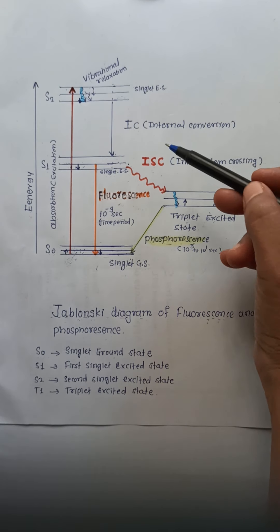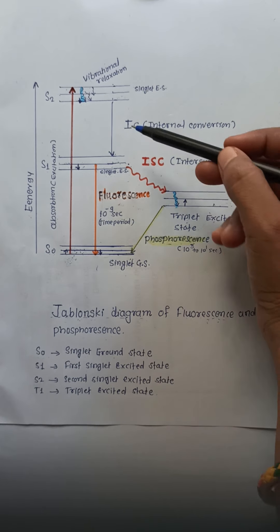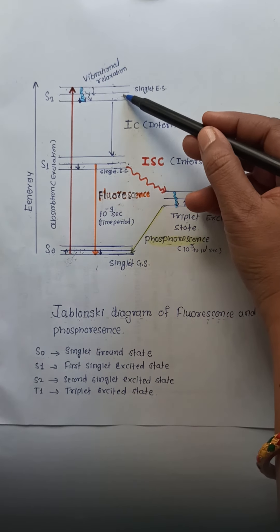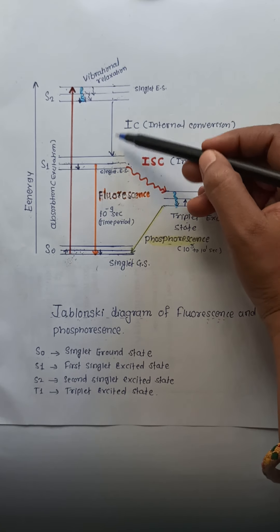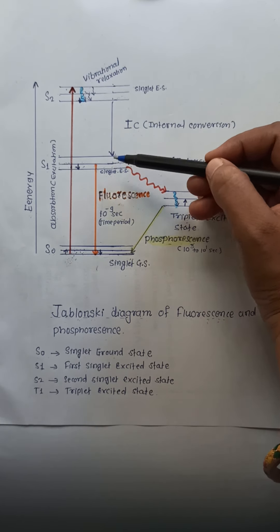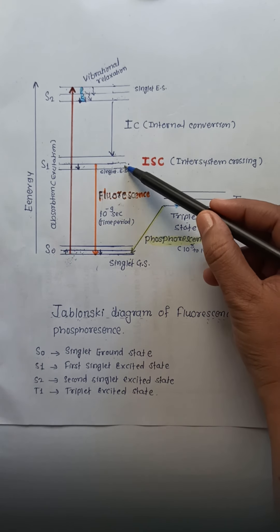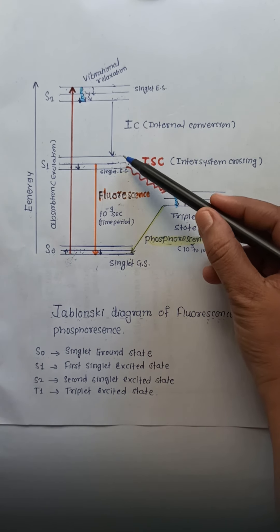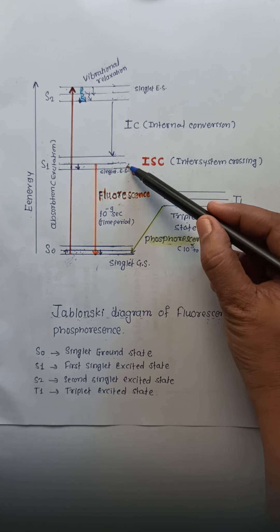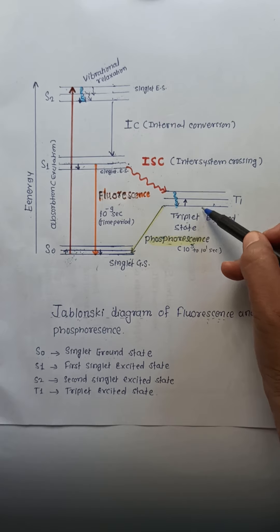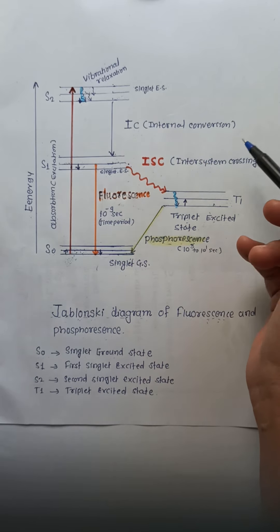In the diagram, we can see IC and ISC. IC means the transition of the molecule from a higher excited state to a lower excited state — for example, S2 to S1. ISC involves the return of the molecule from a state of different spin multiplicity, from S1 to T1. Both IC and ISC are non-radiative processes.